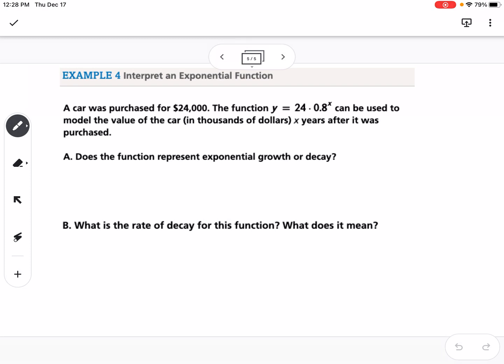And our last example says a car was purchased for $24,000. The function 24 times .8 to the x can be used to model the value of the car in thousands of dollars x years after it was purchased. Okay, it says does the function represent exponential growth or decay? This is going to be a decay equation, and the reason we can tell that is because our B value is .8. So remember, numbers bigger than 1 make it growth. Numbers smaller than 1 make it decay.